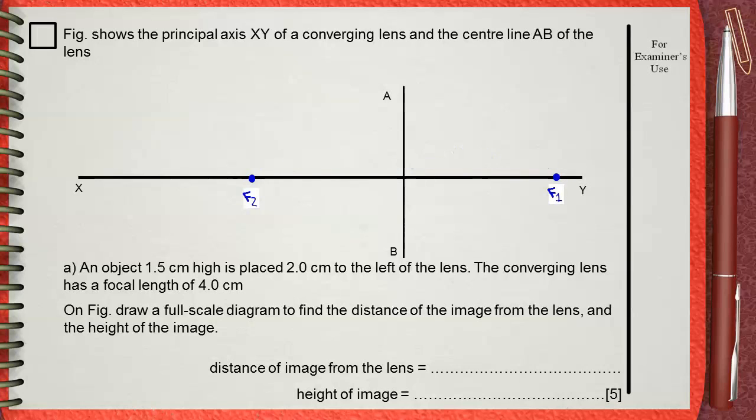Measure 2 centimeters to the left of the lens AB and at this distance from the lens draw an arrow which will represent your object. According to the question this arrow will be 1.5 centimeters high. This is our object according to the givens in the question.